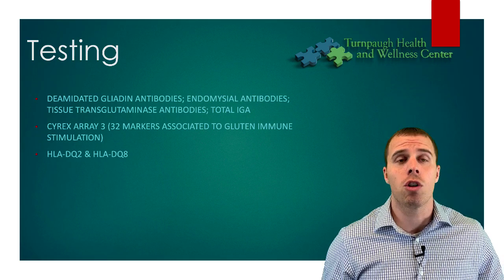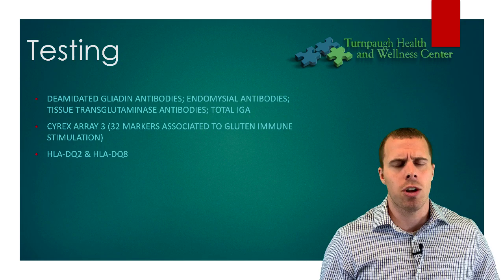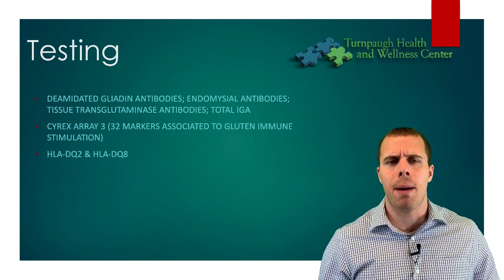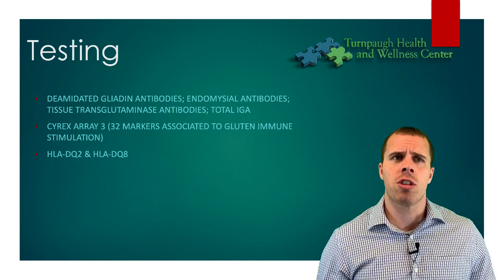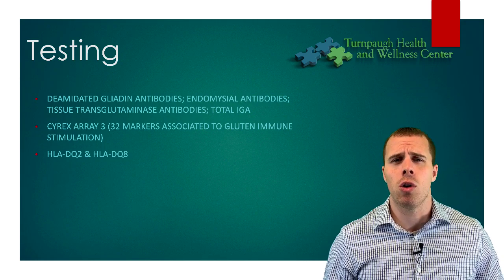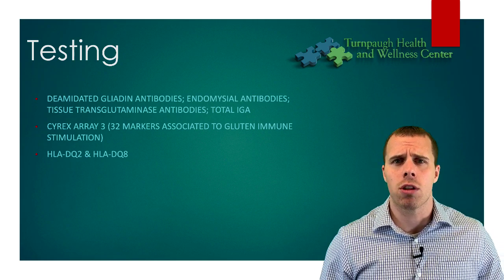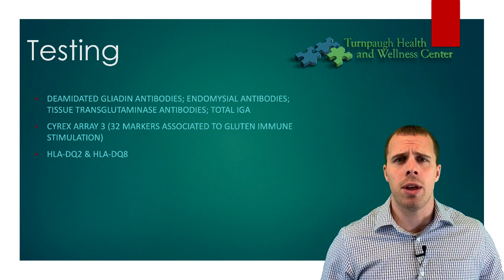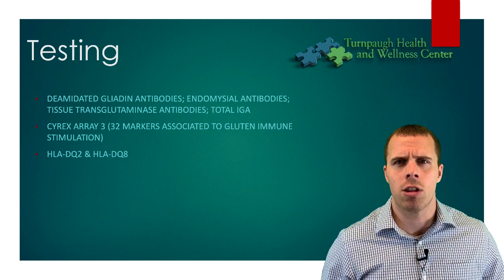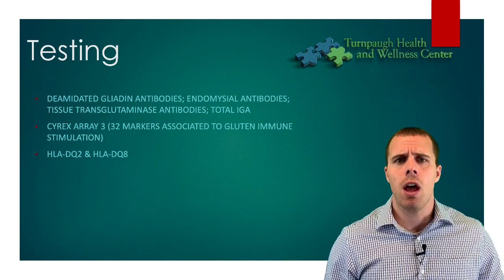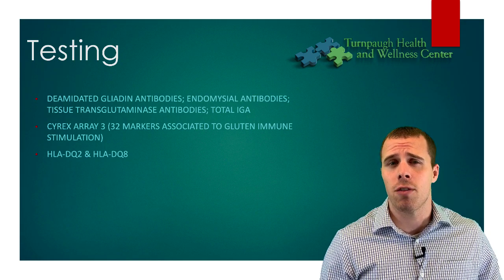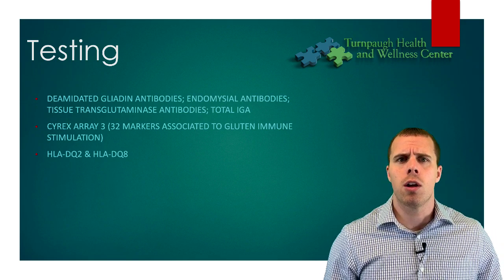For testing, you can do a simple IgE test for a gluten allergy, HLA gene testing, or get a biopsy done for celiac disease. For sensitivity, Cyrex Array 3 does a really good job — it runs over 32 markers looking at gluten sensitivity and your IgG, IgM, and IgA responses. Other standard lab tests include deaminated gliadin antibodies, endomysial antibodies, tissue transglutaminase antibodies, and IgA — all of which create cross-reactivity or molecular mimicry that can attack other aspects of your body.